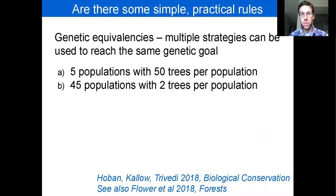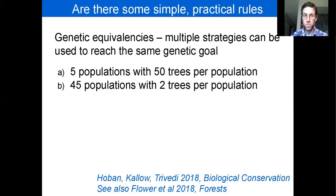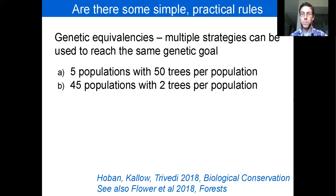Another practical rule we looked at is what I call genetic equivalencies. Often one is limited by either logistics and time in the field, or space and expense within the seed bank or garden. We can trade off between these two expenses, and actually identify strategies that will achieve the same genetic conservation goal but with a different allocation of effort. One strategy has fewer populations — less expense in the field — but more total trees in the collection, thus more expense in the seed bank or garden. The other has many more populations but results in a smaller seed bank required. Depending on the constraints of the organization, we can identify the best strategy.